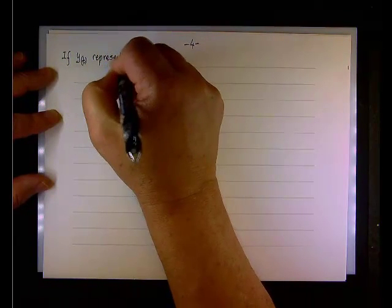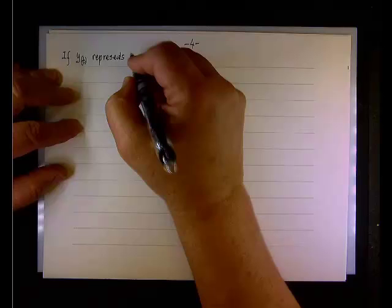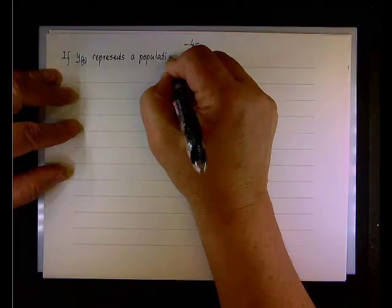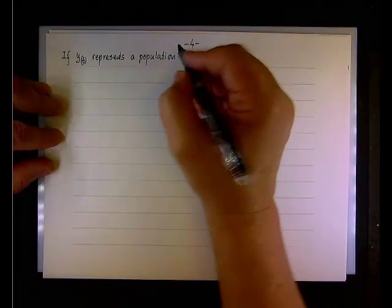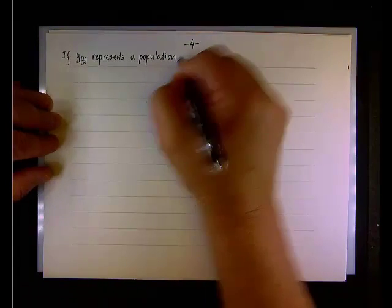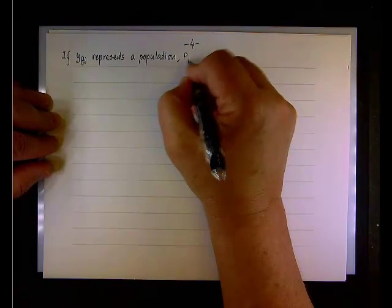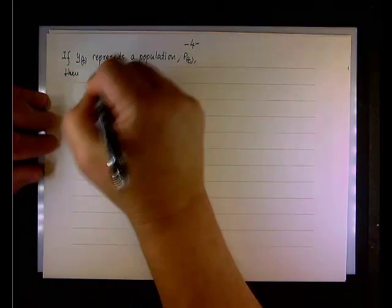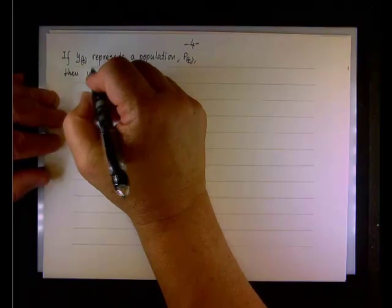But one more thing to wrap this up. Let's say that the y of t represents a population. So if y of t represents a population, that is the function p of t, then we have the PERT model.